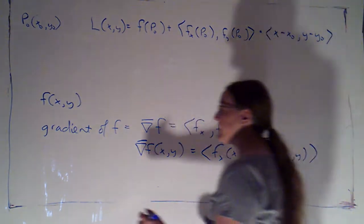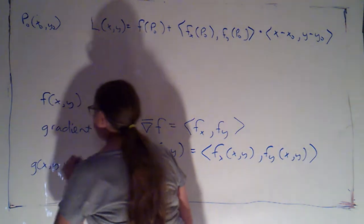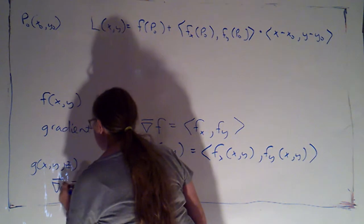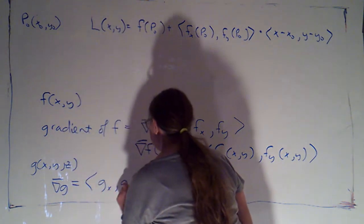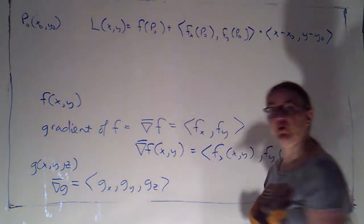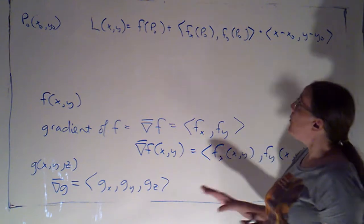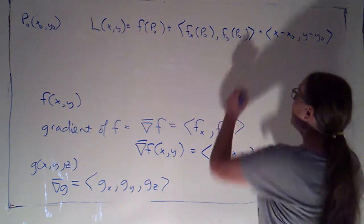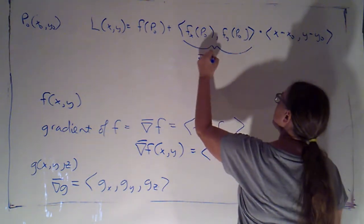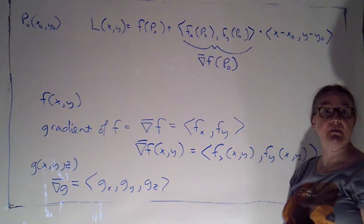Now that generalizes very nicely. If I have g of x, y, z being a function of three variables, the gradient of g would simply be the vector consisting of the three partial derivatives that we have. So what I have right here, this vector that is giving me my rates of change, that's just the gradient of f evaluated at this point, p naught.